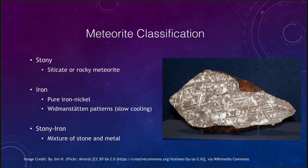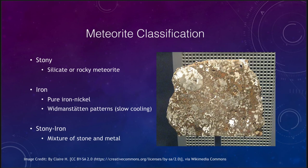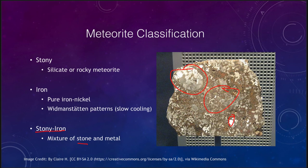The third type is stony-iron meteorites — a mixture of the two, with stony material in some areas and metallic inclusions in others. These could have formed within a larger object that was in the process of differentiation, where material was melting and separating, and the meteorite came from a border region where separation had not fully completed before the object broke apart or solidified.